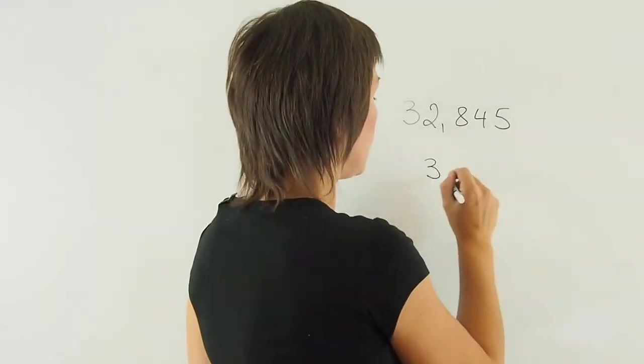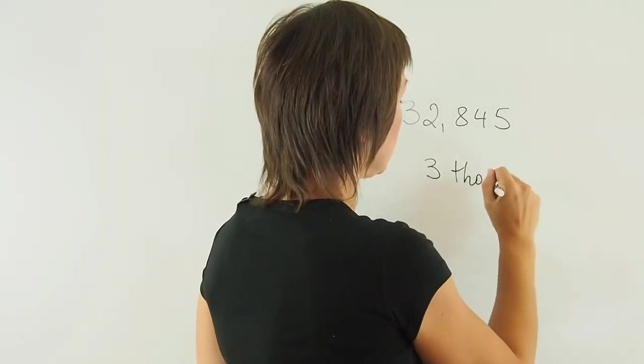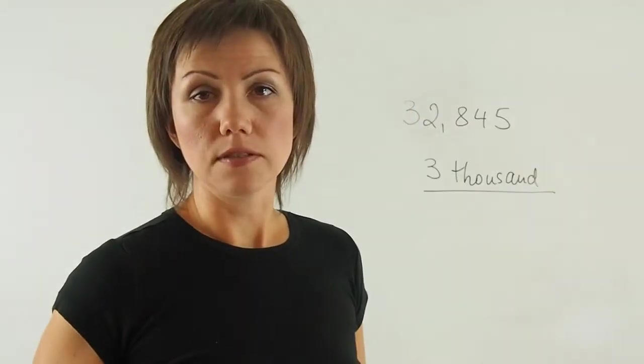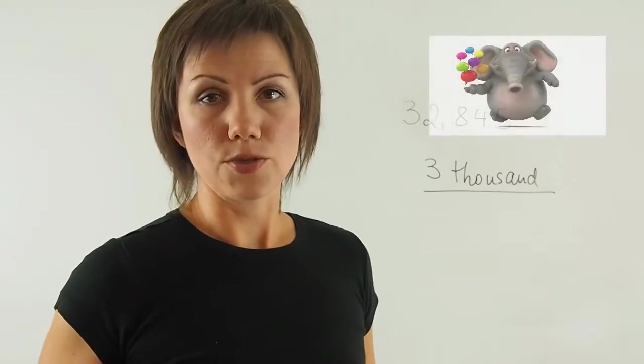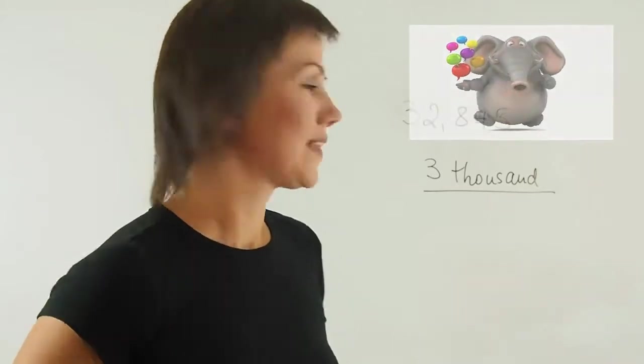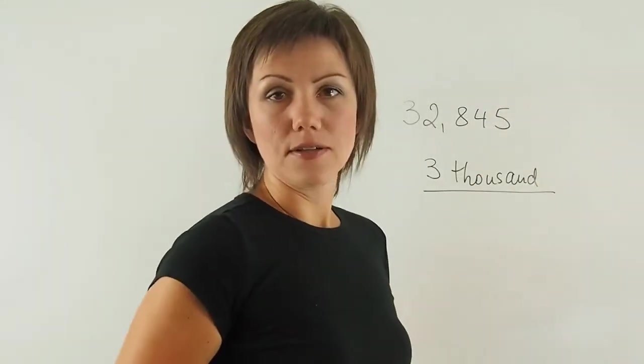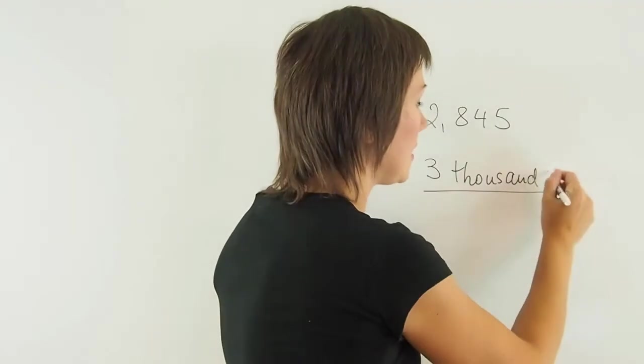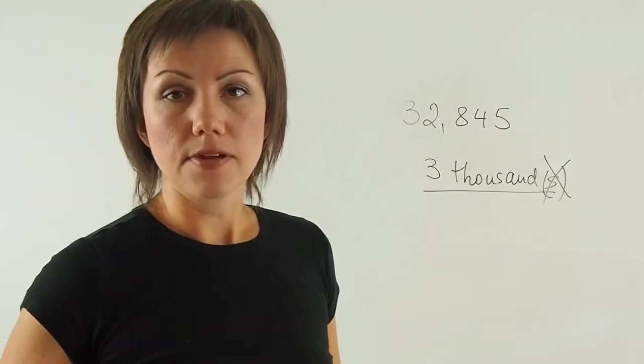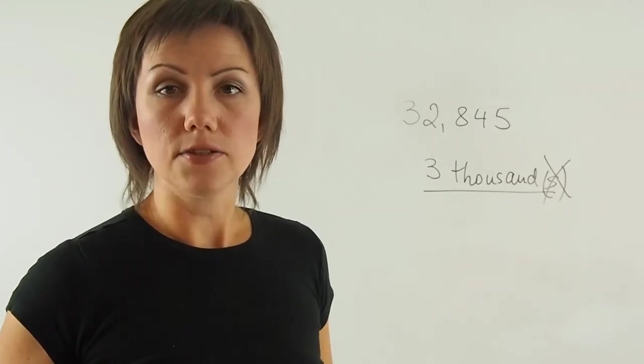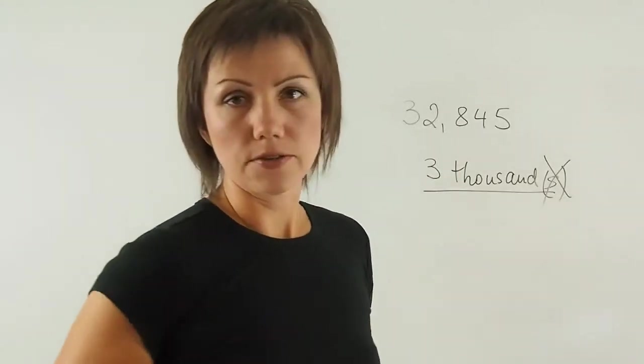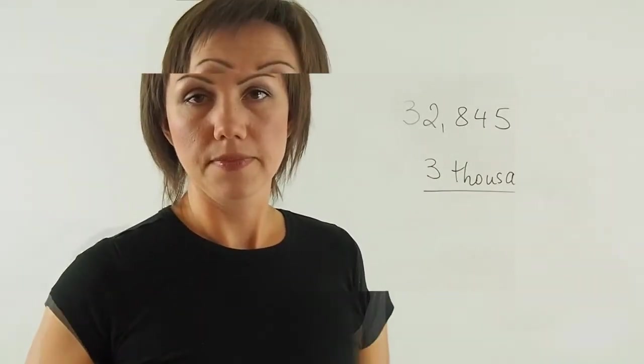For example, if I want to say three thousand of something, three thousand animals are at the zoo. Imagine how huge that zoo is? Anyway, so three thousand animals, I don't need to add s here. But when I say three thousands, then I need to have an s because that identifies the place value of the number.